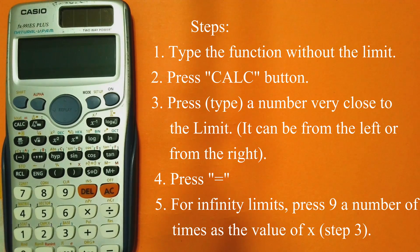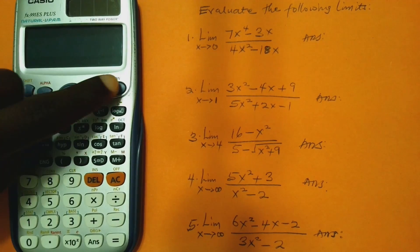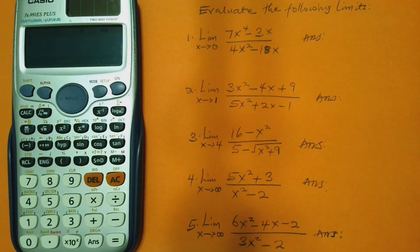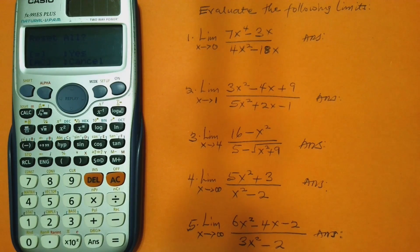All right, now let's solve some examples. We have a general instruction here which says evaluate the following limits. So first, start by turning our calculator on — press On. Then to make sure our calculator has the right settings, let's clear the memory. So we press Shift, 9, 3, which means we are clearing everything. Then we press equal to and AC. Our calculator's memory is cleared, now ready to work.